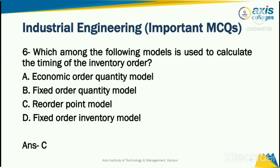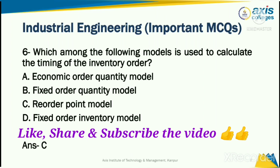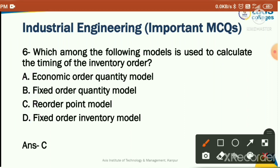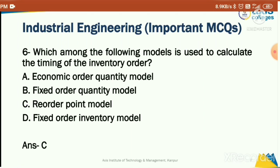Which among the following models is used to calculate the timing of the inventory order? Options: economic order quantity model, fixed order quantity model, reorder point model, or fixed order inventory model. Option C is correct: the reorder point model is used to calculate the timing of the inventory order.